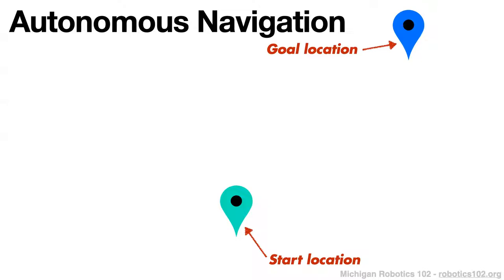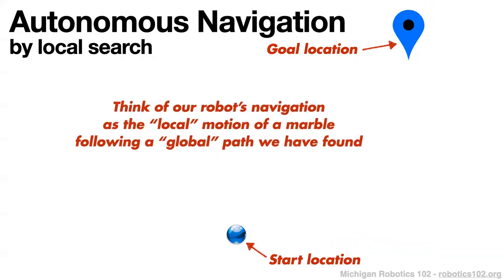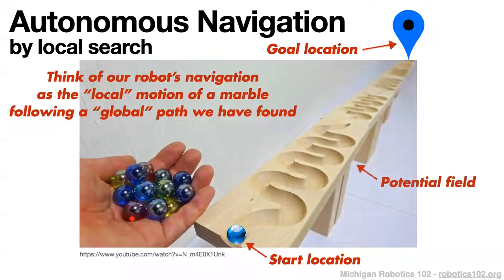Thinking about autonomous navigation again: we're going from a start location to a goal location. If we think about doing this by a local search method, we'd think of our robot's navigation as following the local motion of a marble — locally following the best route along a path, given that we've already laid down a global path in our global workspace.